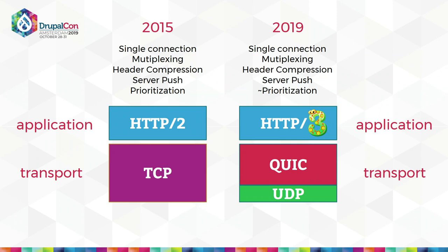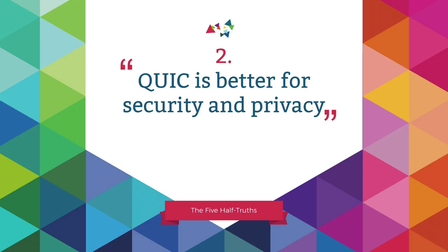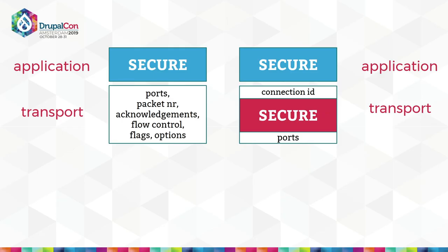So we're going to focus mostly on QUIC for the rest of the presentation. One of the things you might have heard about QUIC is that it's better for security and privacy. This is kind of true, but probably not in the way you think. It's not like QUIC is suddenly going to encrypt your passwords better or make your web page contents more secure — you can already do that with normal HTTPS. The main thing QUIC adds is it starts encrypting the transport layer as well. There's a lot of extra stuff in there — packet numbers, acknowledgements, and retransmissions — that are plain text and visible for TCP, but are now encrypted over QUIC.